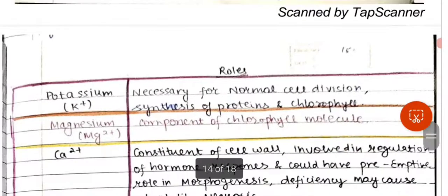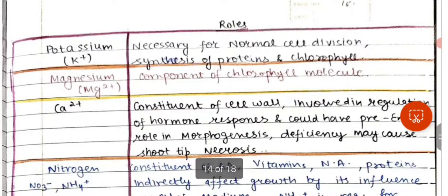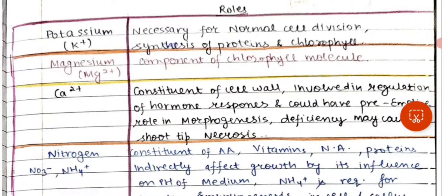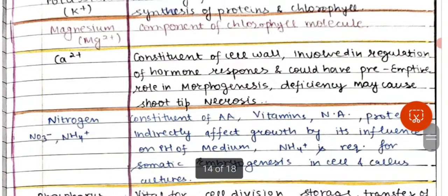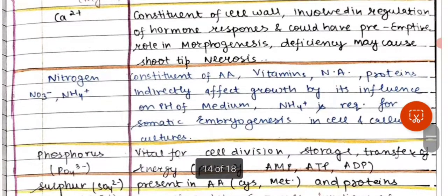Looking at the role of individual nutrients: potassium is necessary for normal cell division, synthesis of proteins and chlorophyll. Magnesium is a component of the chlorophyll molecule. Calcium is a constituent of the cell wall, involved in the regulation of hormone responses, and could have an important role in morphogenesis; its deficiency may cause shoot tip necrosis.